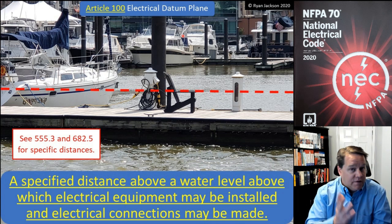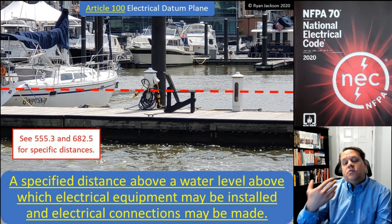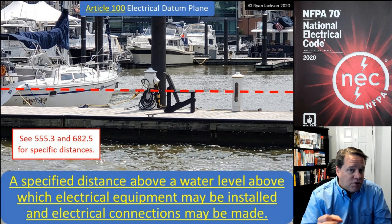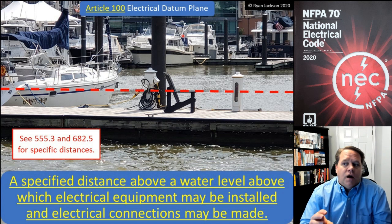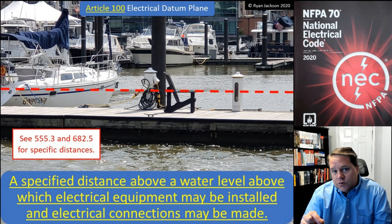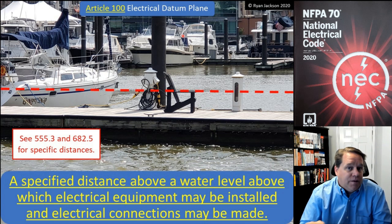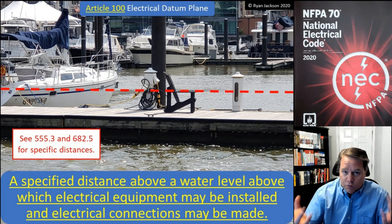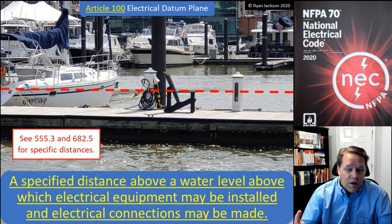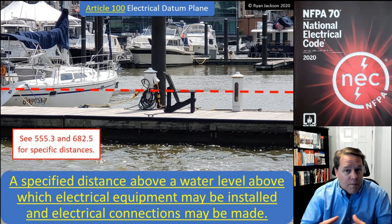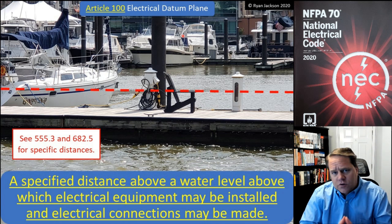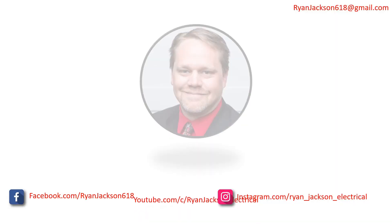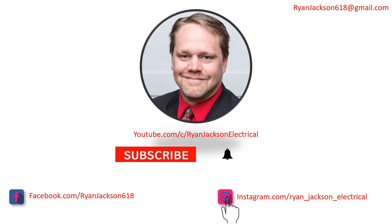Exactly where the datum plane is depends on those other factors — you'd want to go to 555.3 or 682.5 to determine where the actual electrical datum plane is. In the 2023 code, it looks like we're going to add electrical datum plane to article 551, which covers RV parks as well. This makes sense if you have an RV park next to a river or the ocean, where you need to establish where you may and may not have electrical equipment and terminations.